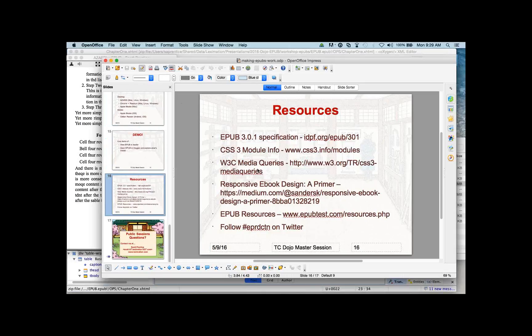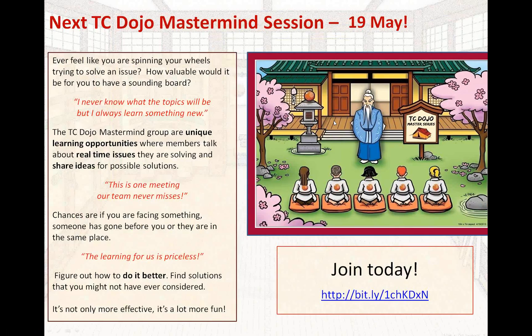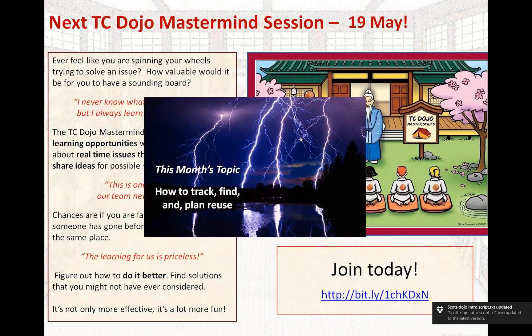All right folks, type in your questions. Coming up on the 19th of May is our next Mastermind session — these are member-driven discussion groups where attendees present their specific challenges on topics on their mind in a confidential, supportive environment. We have two of these groups going on right now: one is Everything Techcom, and one is a tool-specific webinar. This month's topic in the Mastermind is Track, Find, and Planning Reuse.